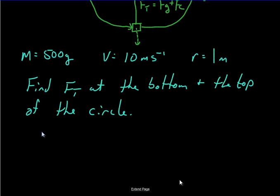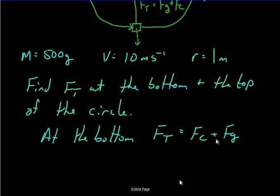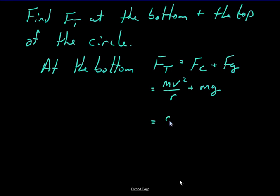Let's do the bottom first. So at the bottom, just remember that ft is going to be the sum of those two forces. The tension has to provide centripetal force and enough force to keep that thing from accelerating towards the ground. So it's really just as simple as plugging in your values for these things. In this case, I think we said it was 0.5 kg, 10 meters per second. Square that. Radius of one plus mg, so 0.5 times 9.8 meters per second squared.